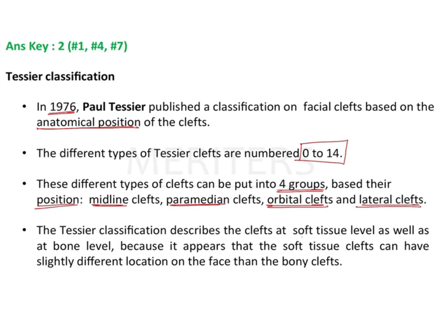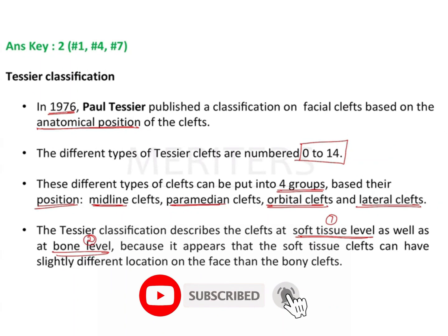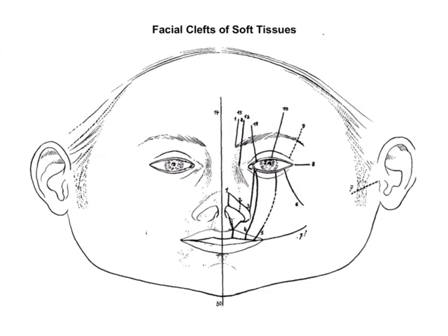Paul Tessier classified facial clefts numbering from 0 to 14 and grouped them into four groups: midline, paramedian, orbital, and lateral. He also described the cleft at two different levels — the soft tissue level and the hard tissue level — because the soft tissue cleft will have a slightly different location compared to the underlying bony cleft.